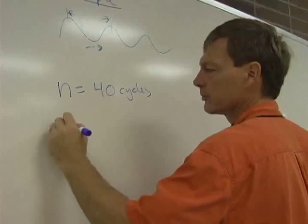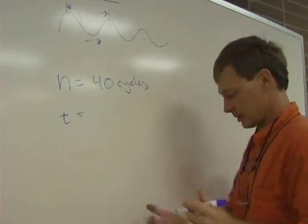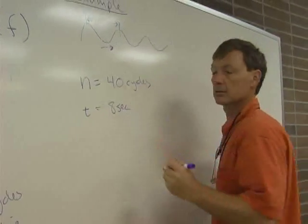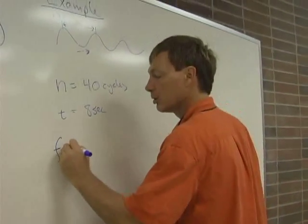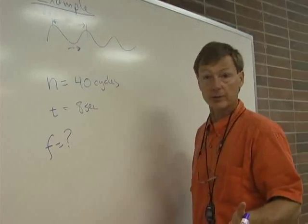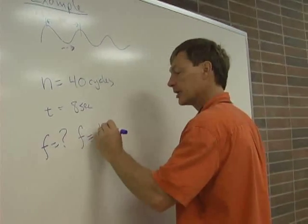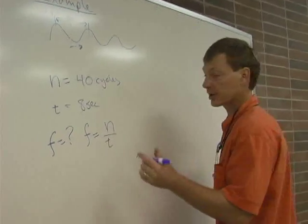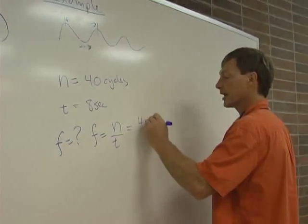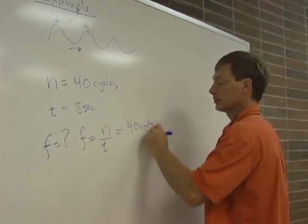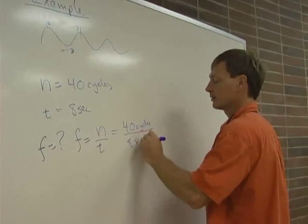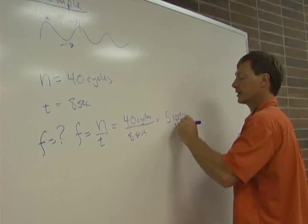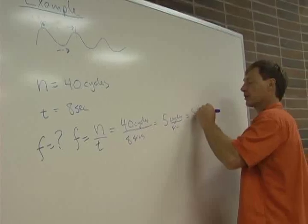And that 40 cycles happens at my stopwatch in eight seconds. And I want to know, what's the frequency? Frequency is the number of cycles divided by the time it took for all those cycles to come through, which is 40 cycles in eight seconds, which is five cycles per second, which is five hertz.